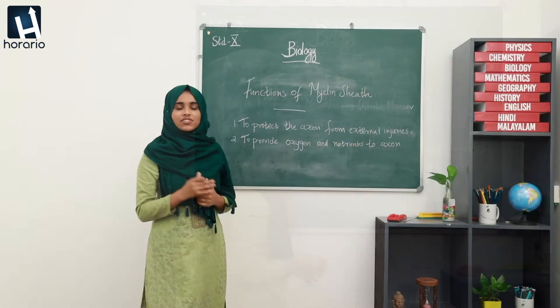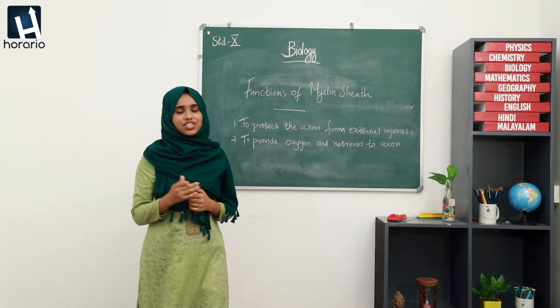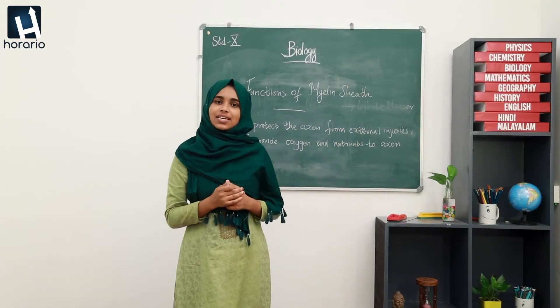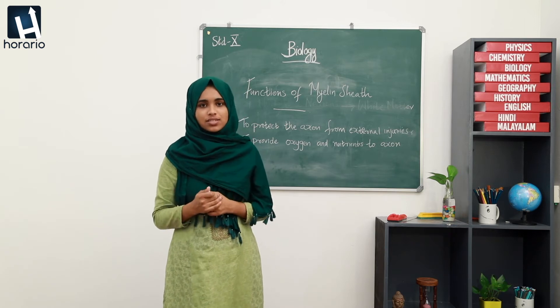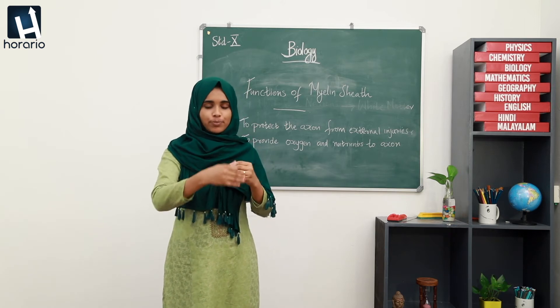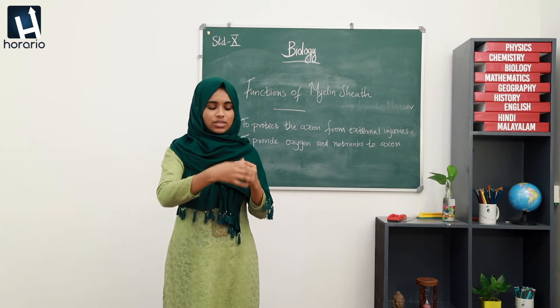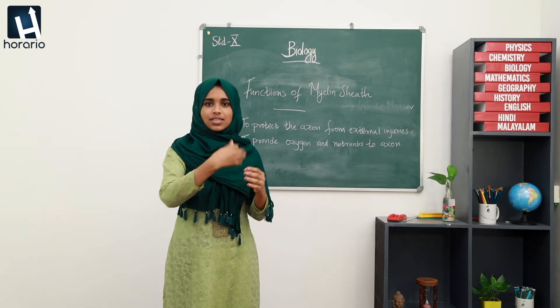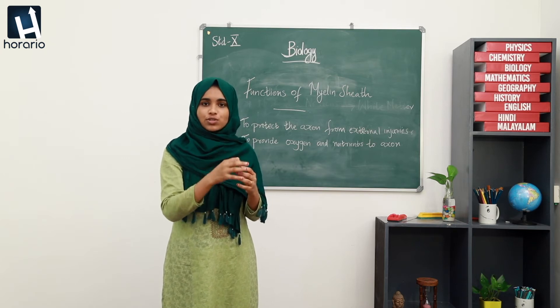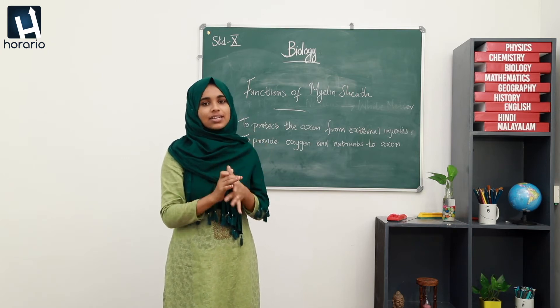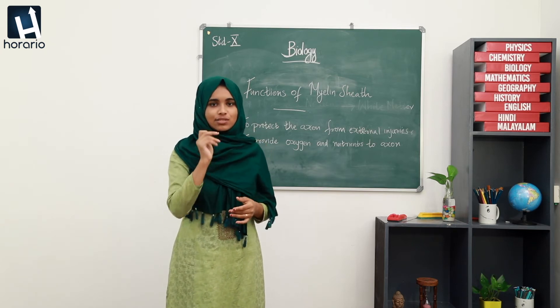Number three: myelin sheaths act as electrical insulators. They encircle the axon in order to act as electrical insulators.